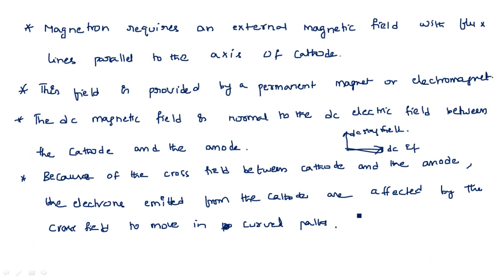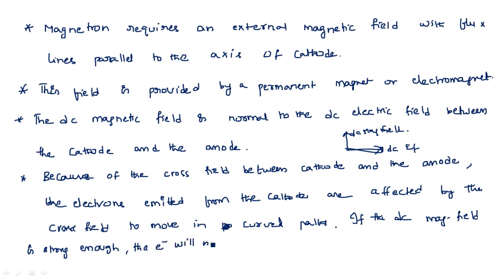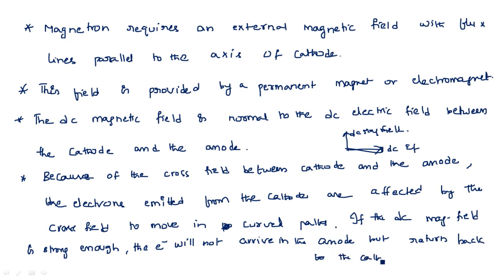If the DC magnetic field is strong enough, the electrons will not arrive at the anode but will return back to the cathode. That means if a strong magnetic field exists, the electrons which are generated and flowing towards the anode come back towards the cathode and are attracted by it.